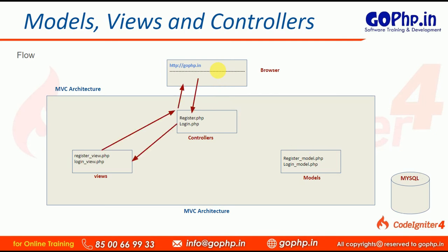Now let me show you how a view communicates. If you want to load any view into the browser, the first request comes to the controller only. After that it goes to the view, and the controller loads the respective view to be displayed on the front end. So the application flow is: first request comes to the controller, it goes to the view, and the response comes back to the controller, which displays it in the browser.